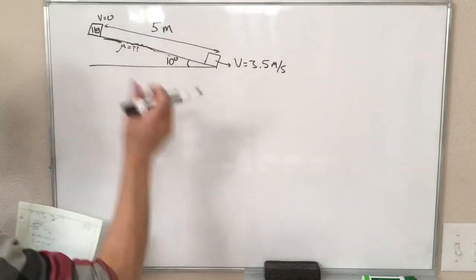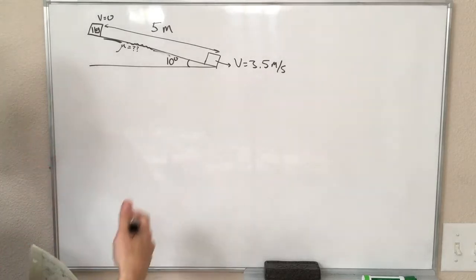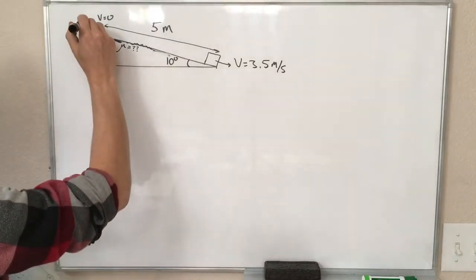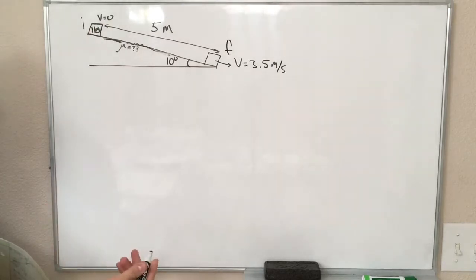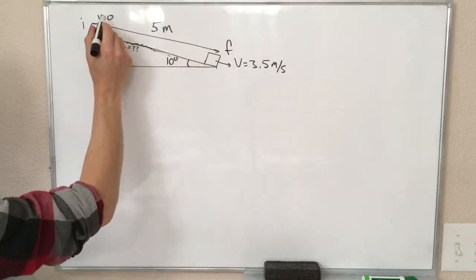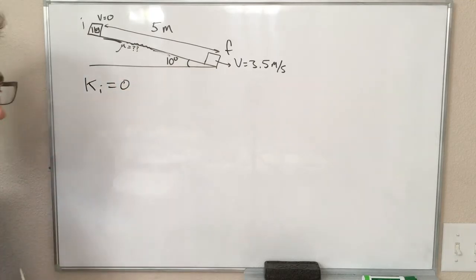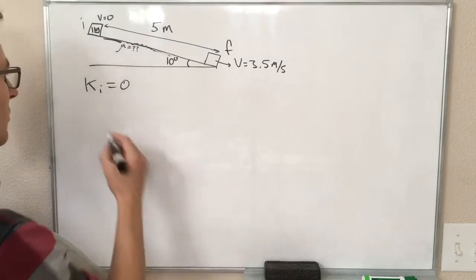Okay, so if we want to look at the work done by the friction force, we should start by accounting for the energy in the problem. So at the beginning, in the initial position of the block, what kinds of energy does it have? Well, its velocity is zero, so it doesn't have any initial kinetic energy. There are no springs in this problem, so Us equals zero for all of it.